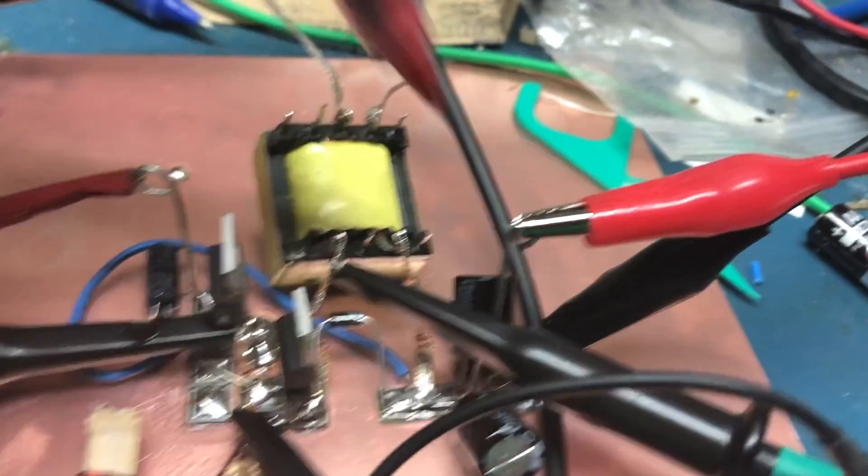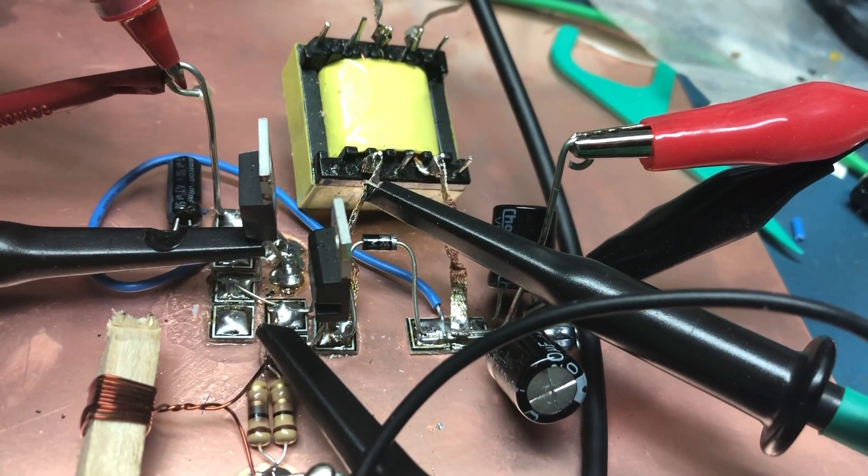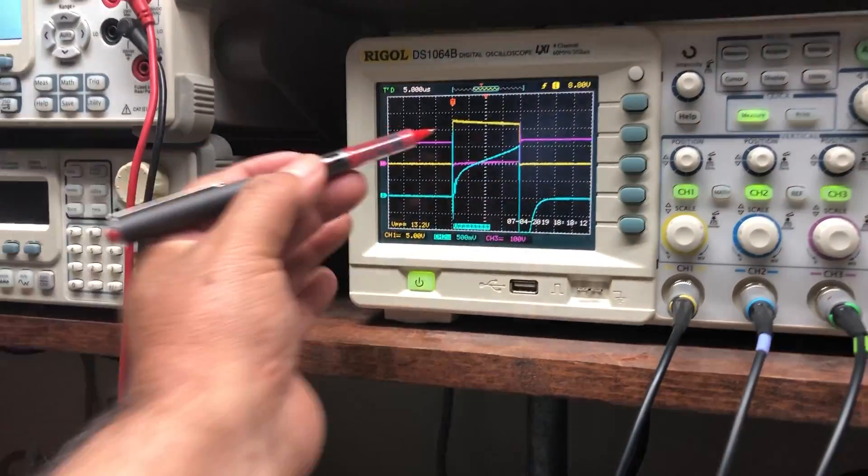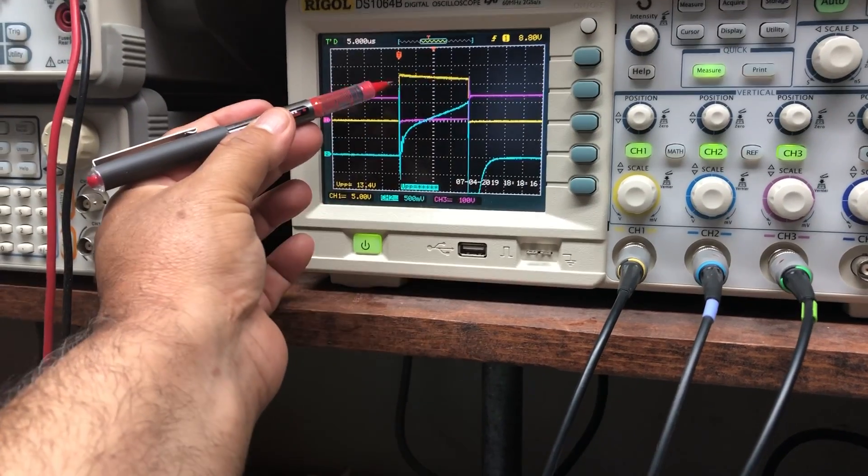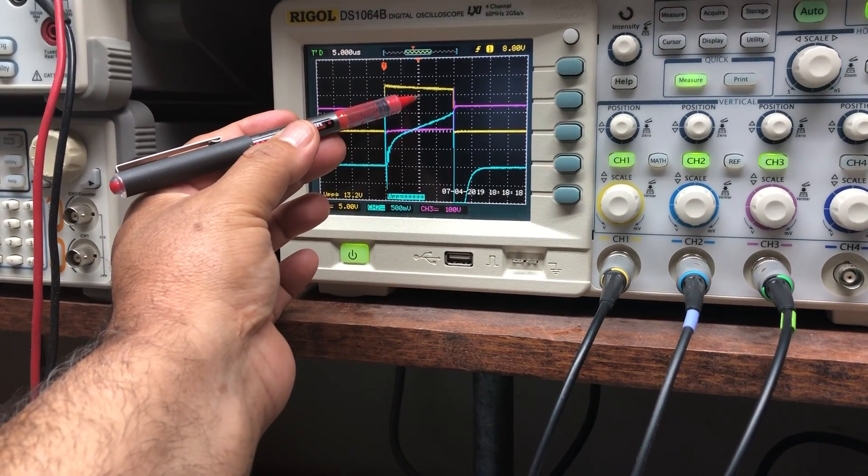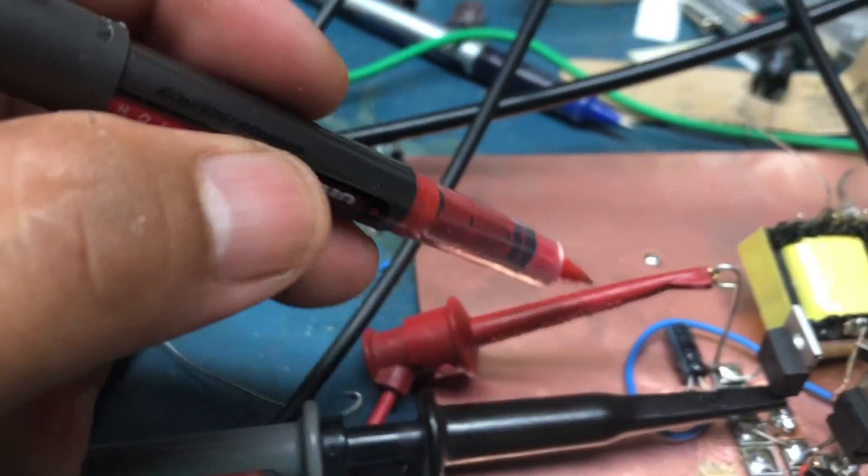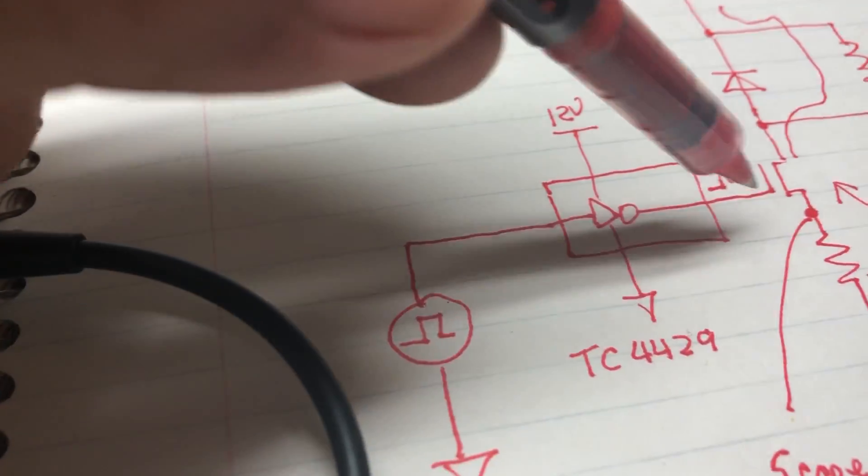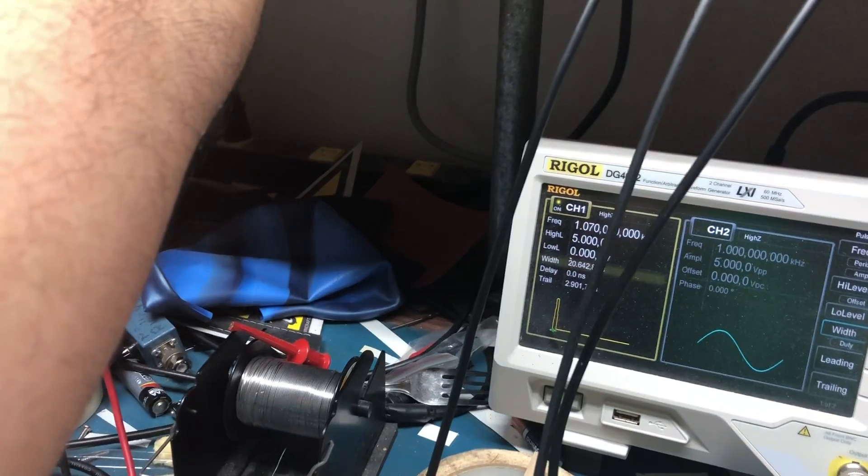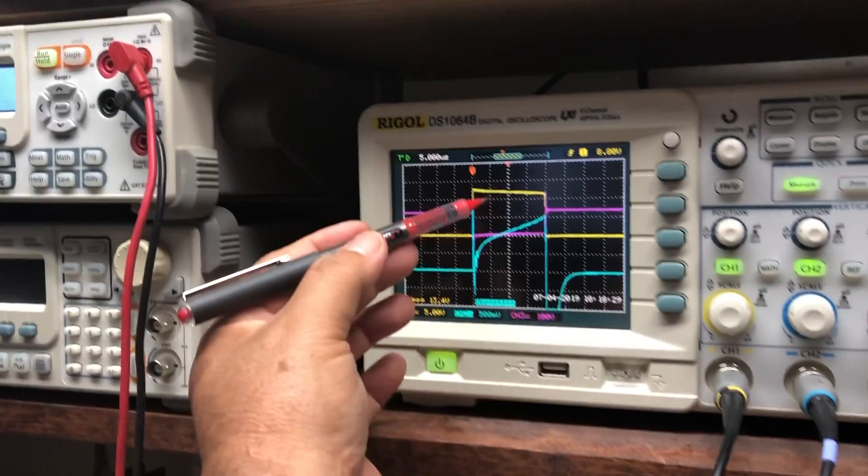Basically I'm monitoring the input of the function generator which would be the yellow one. Actually it's the output of the TC, basically right there, so that's the gate.